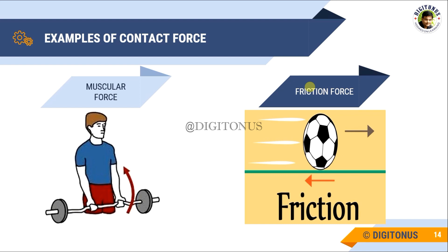Our next force is muscular force. The force resulting because of the action of muscles is muscular force. It helps animals carry out their activities. For example, animals like camels and bullocks use muscular force to carry out their activities.